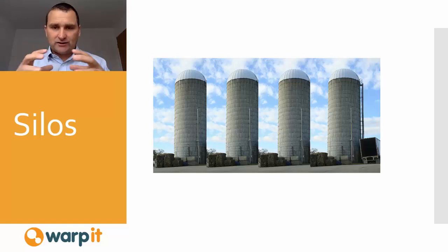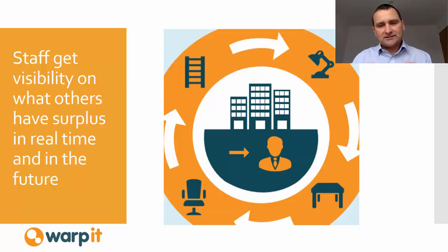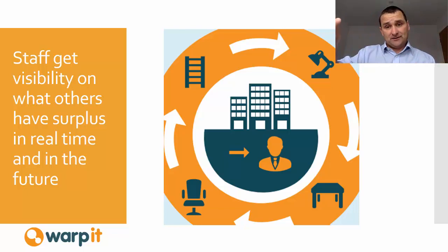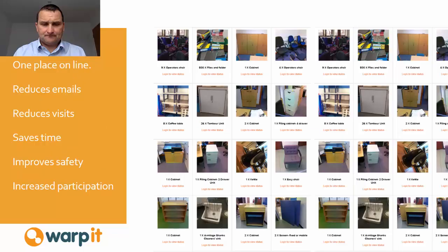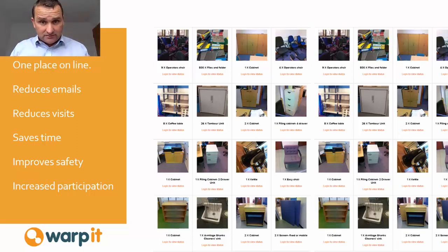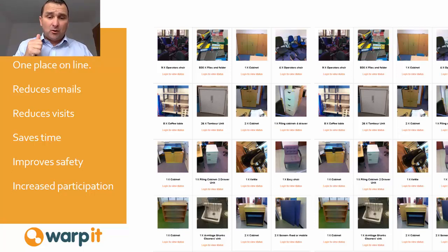The departments are working in silos. What we try to do is break down those silos by developing an online platform where all staff can get visibility on what other staff have surplus to requirements today or in the future. We create online marketplaces within your organization where, before staff buy anything, they can log on and see what other staff have surplus to requirements. And on the flip side, when staff try to dispose of assets instead of phoning up a porter and getting rid of the asset to the skip, they add the asset to WarpIt so everybody else can see it.